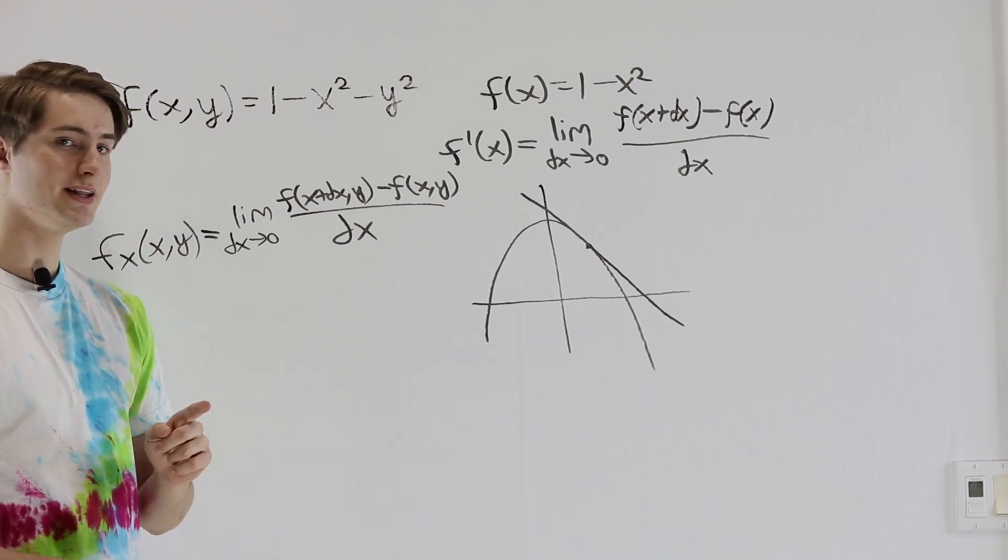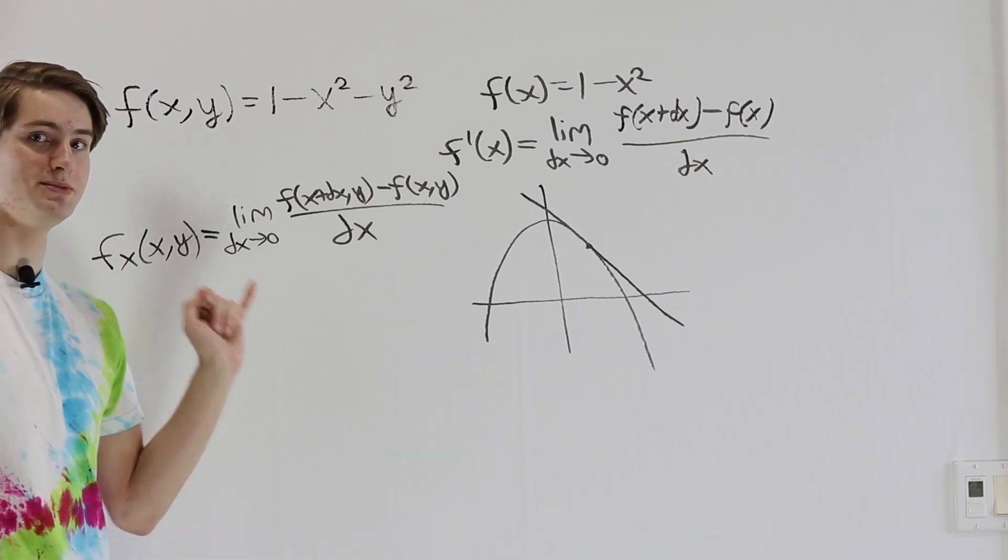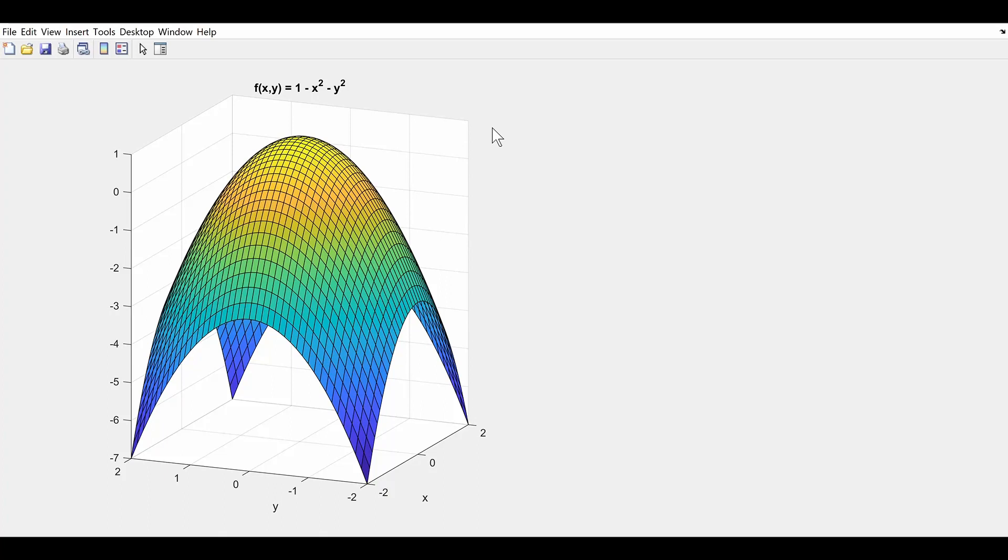Now I'm going to hop into MATLAB for a second and we'll take a look at what this means graphically. So here on the left side, you can see the graph of the function we're looking at, which is f of x, y equals 1 minus x squared minus y squared.